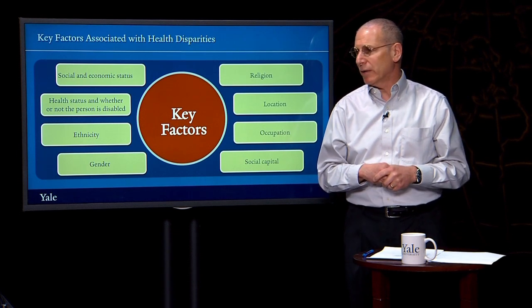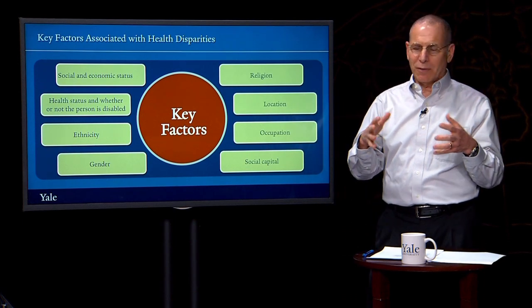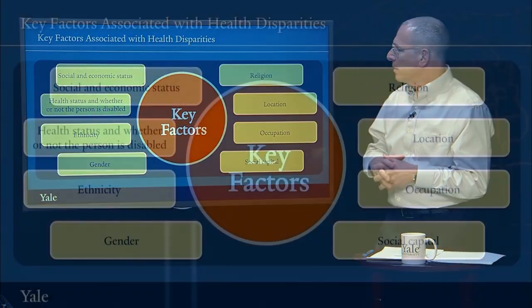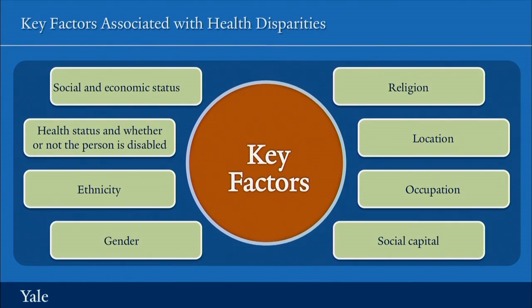We're likely to find health disparities along any dimension around which people in different societies discriminate. Some of the factors most associated with health disparities have to do with social and economic status — whether people are better off or less well off. Health status and disability also matter: a patient with leprosy who is disfigured may face discrimination from health care workers and society, as we've also seen extensively with HIV and AIDS. Ethnicity is a common basis for health disparities, and people who are indigenous or from certain ethnic groups may also tend to be of lower income and lower educational status.